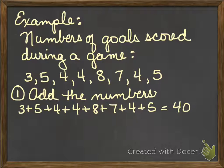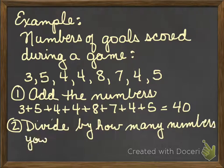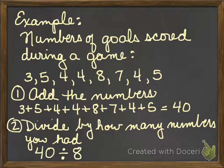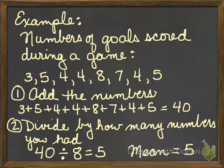Now I have to look at how many numbers I originally had. So I originally had one, two, three, four, five, six, seven, eight different numbers. So I take my 40 and divide by eight. That gives me five. So my mean is five. My average is five.